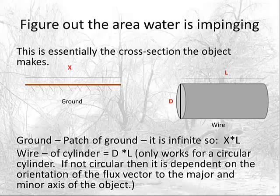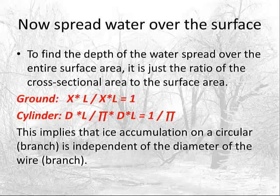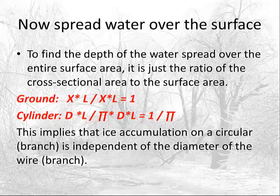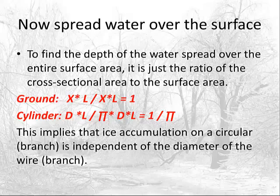To find the depth of water spread over the entire surface area, take the ratio of cross-sectional area to surface area. For the ground it's one. For a cylinder, the cross-sectional area is D times L, but the surface area is pi times D times L — so the ratio is one over pi, essentially almost one-third. This means the ice accumulation on any circular object, whether branch or wire, is independent of diameter. You don't need to worry whether a bigger branch will accumulate a larger thickness of ice than a thin branch.